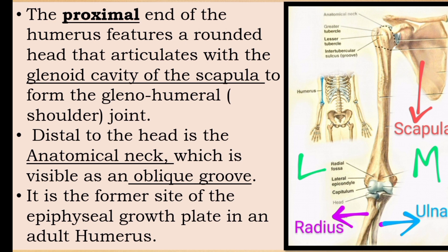Distal to the head is the anatomical neck. It is visible as an oblique groove. It is the former site of the epiphyseal growth plate in an adult humerus.